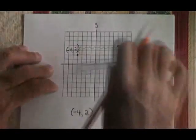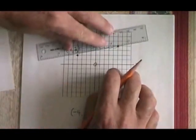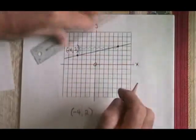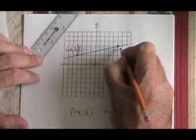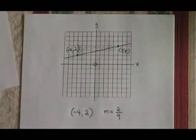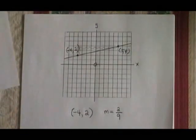I have found the second point, and I get my ruler, draw a line through the points, identify the second point, which has coordinates 5, 4, and I have graphed my second line. Let's do a few more examples.